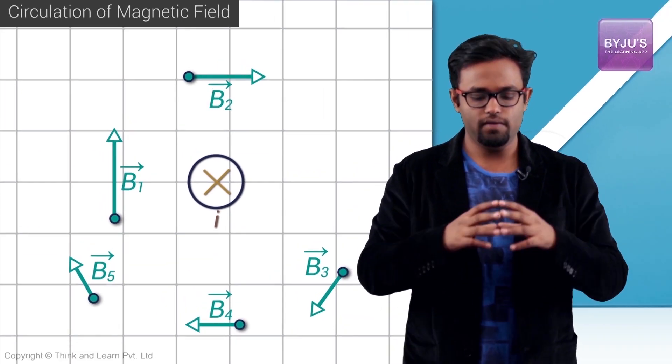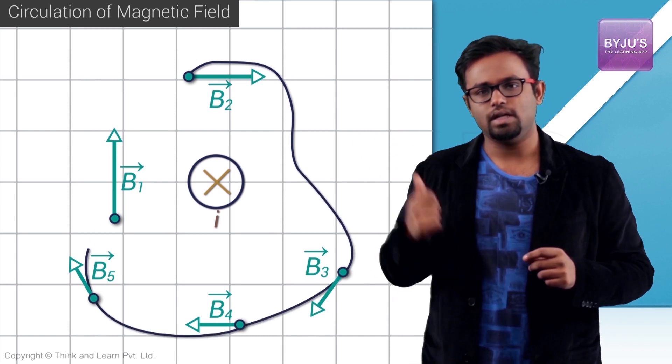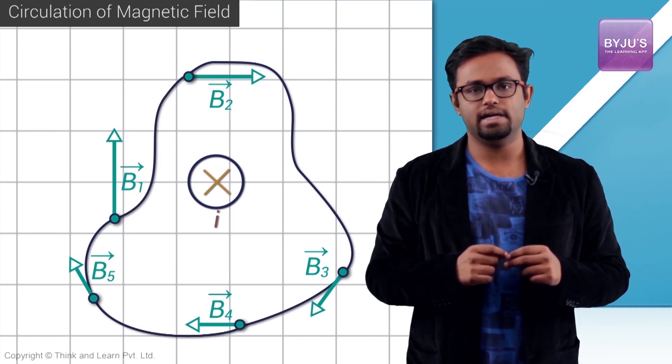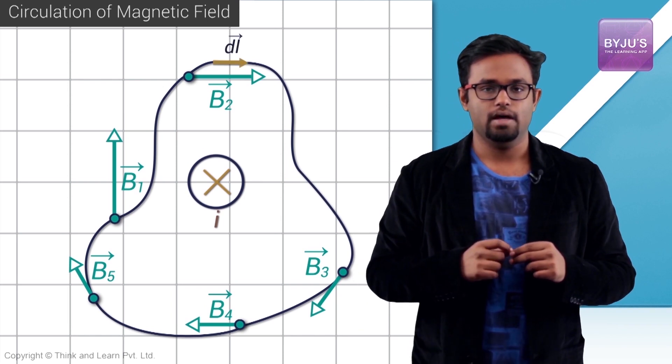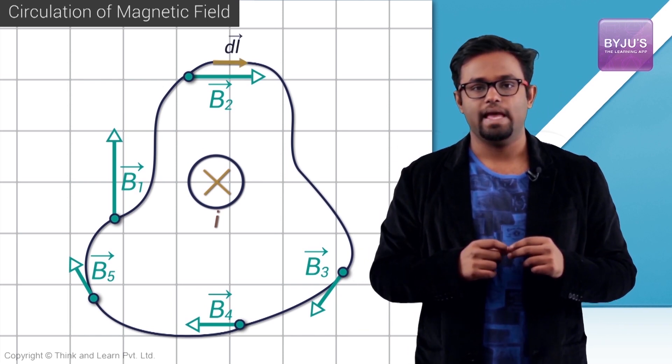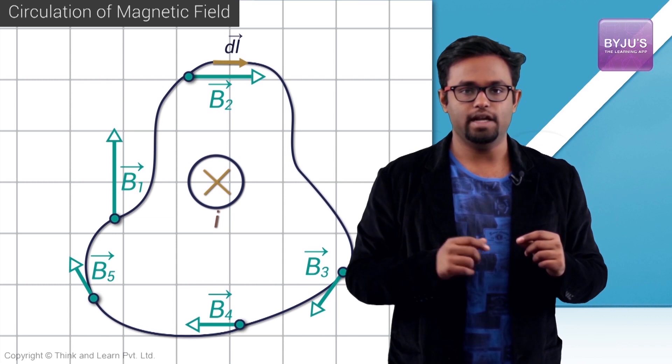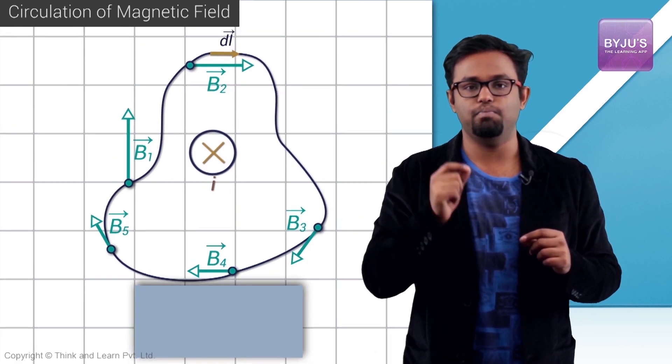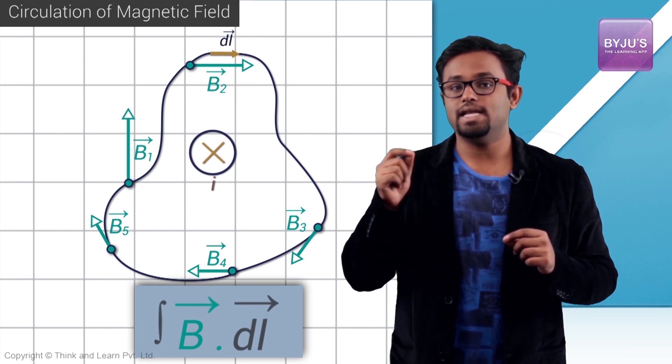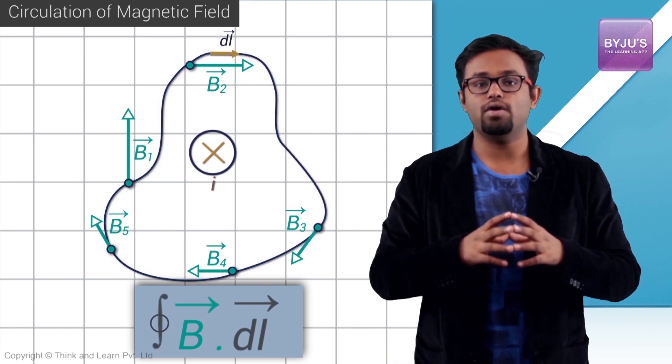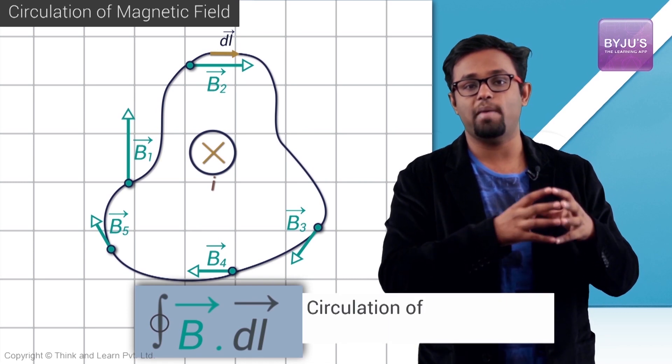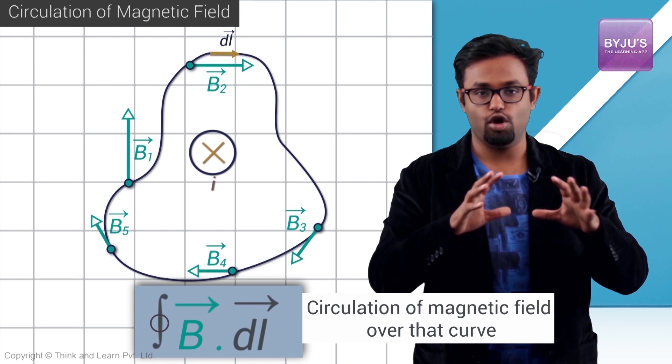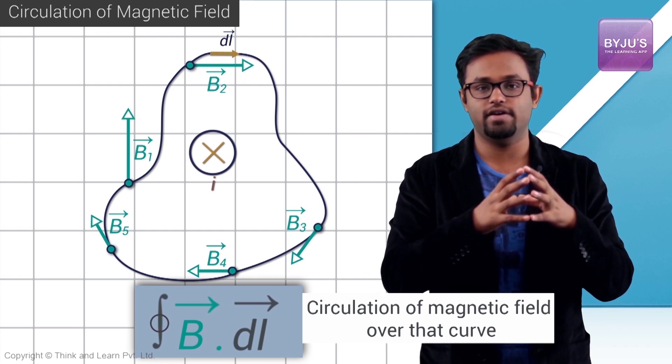Now if in this field you take any curve and you define a small element in that curve, say DL, an element like that, and if you find the dot product between the magnetic field and the DL, B dot DL, and you integrate it over the entire loop, you get a quantity called the circulation of magnetic field over that curve.